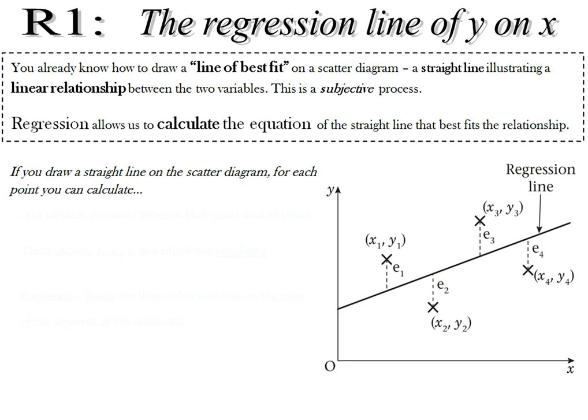Regression is a chapter following on from correlation and it uses some of the same formulae. There are more pitfalls so take a little more care, but essentially it's using a formula with a bit of interpreting thrown in. What it's all about is finding a line of best fit. We're used to doing line of best fit by eye — we get a ruler and say 'that looks about right.' This gives a good approximation for the linear relationship, but it's not particularly precise, and regression is the process by which we get precision.